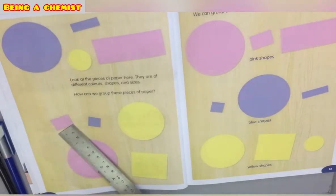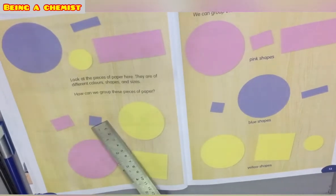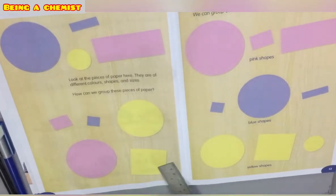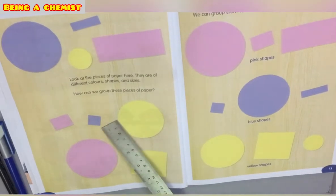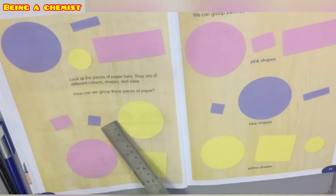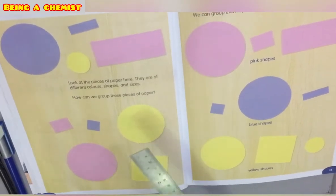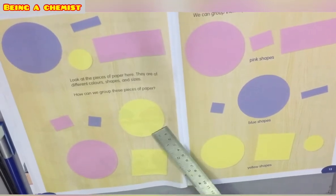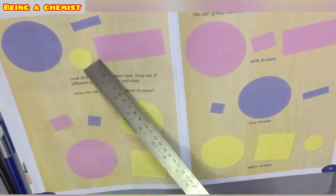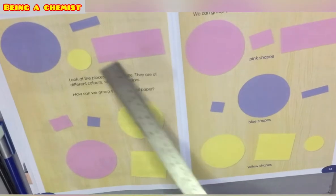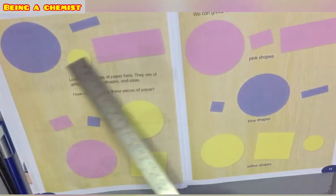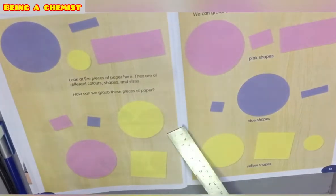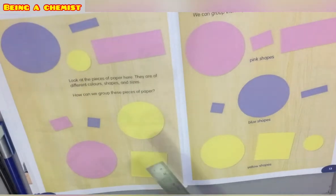Comparing sizes: this paper piece is bigger and this is also a rectangle shape but smaller. If you compare it to a square, it is larger or bigger, while another is smaller. This circle is bigger in size while another is smaller. So all different colors of paper pieces, different shapes, and different sizes.